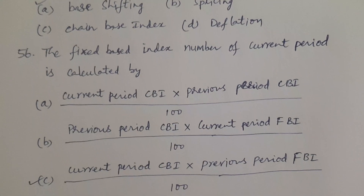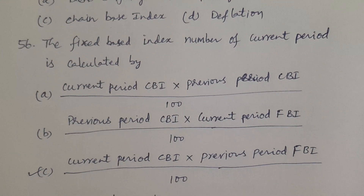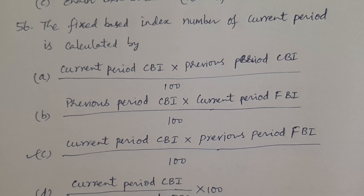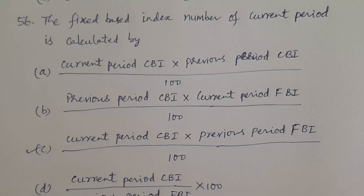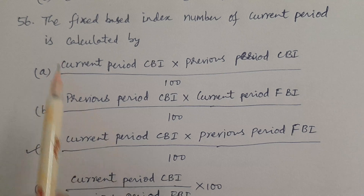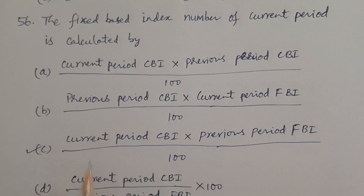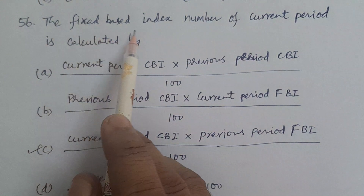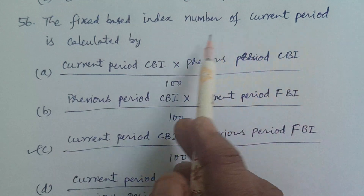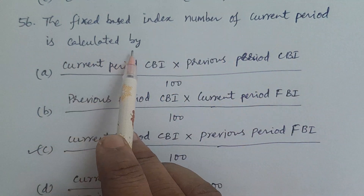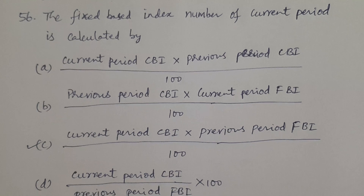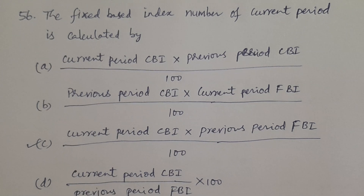Question number 56. The fixed base index number of the current period is going to be calculated by — what is the formula?